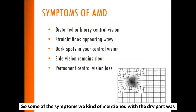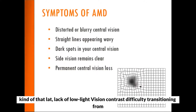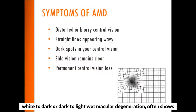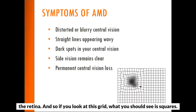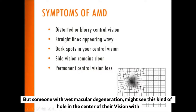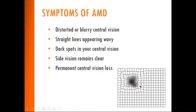Some of the symptoms with the dry stage include lack of low-light vision and difficulty transitioning from light to dark or dark to light. Wet macular degeneration often shows up with a central smudge in your vision — straight lines appear blurry because that swelling is distorting the retina. If you look at a grid, you should see squares, but someone with wet macular degeneration might see a kind of hole in the center of their vision with a black hole effect going on.